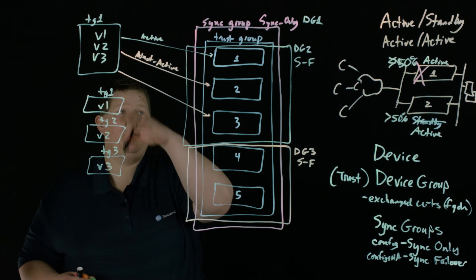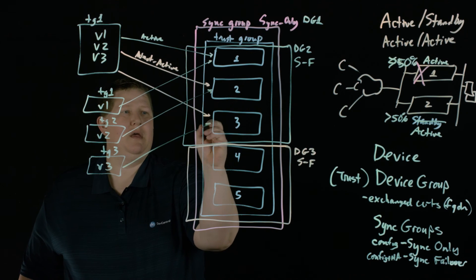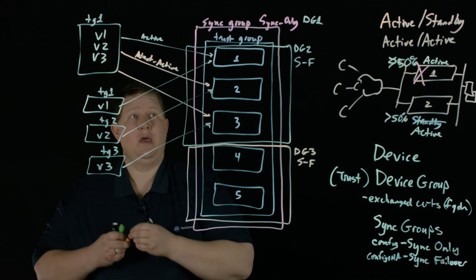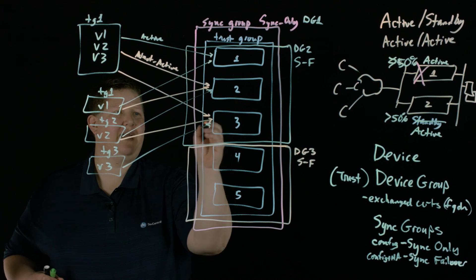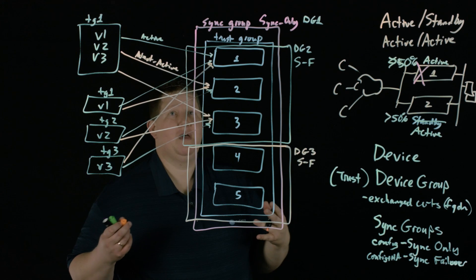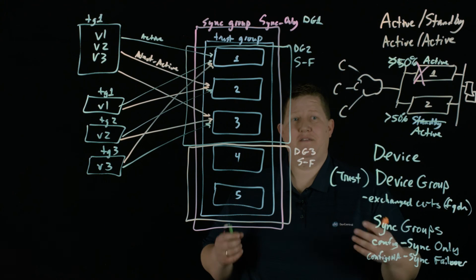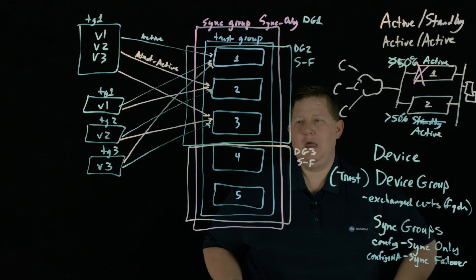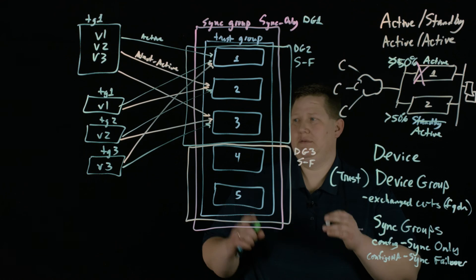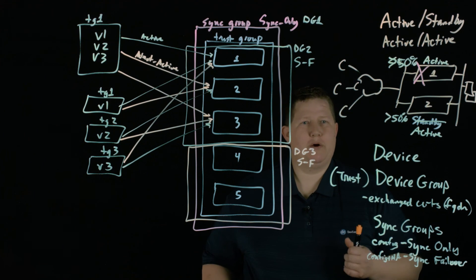Because I have three individual traffic groups and each can only be active on a single device, I can be active on Traffic Group One here, active on Traffic Group Two there, and active on Traffic Group Three on the third device. You can see that you can get very complex with your configurations. To clarify: device groups are about devices, configuration, and HA settings; traffic groups determine where your traffic goes. You can view the configuration of all your groups using 'tmsh show cm status.'